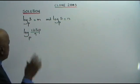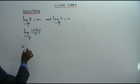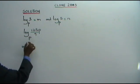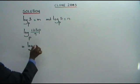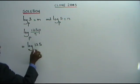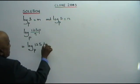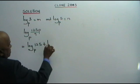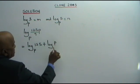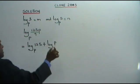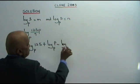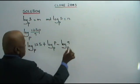So this is how it works. It is equal to: log 125, base P, plus log P, base P, minus log 9, base P.